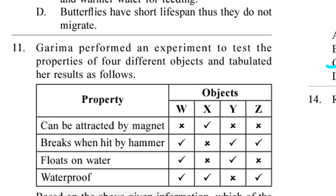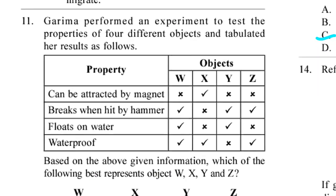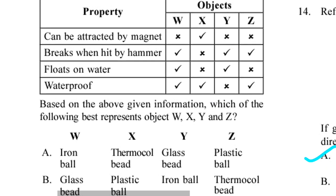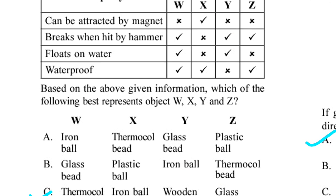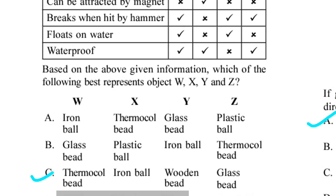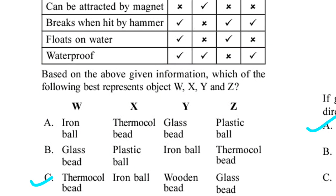Question 11. Garima performed an experiment to test the properties of four different objects and tabulated her results as follows. Based on the above given information, which of the following best represents objects W, X, Y and Z? Answer is option C. W will be thermocol bead, X iron ball, Y wooden bead and Z glass.